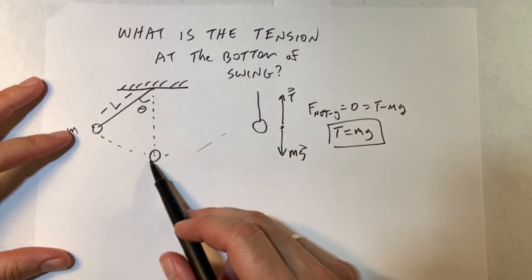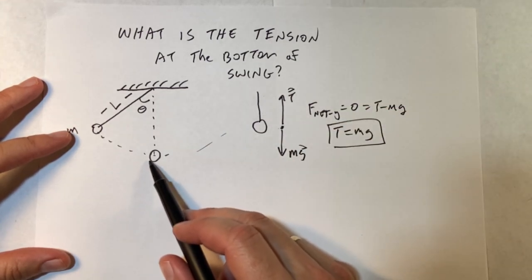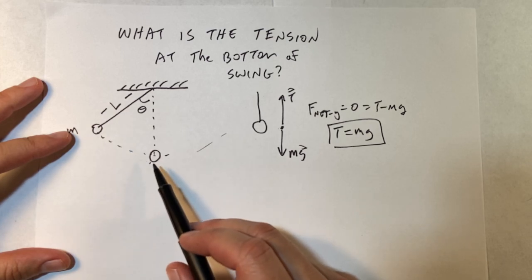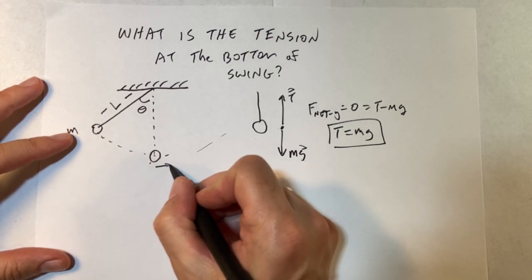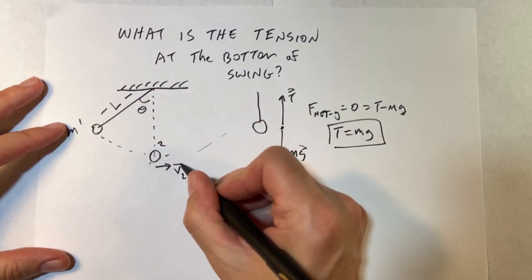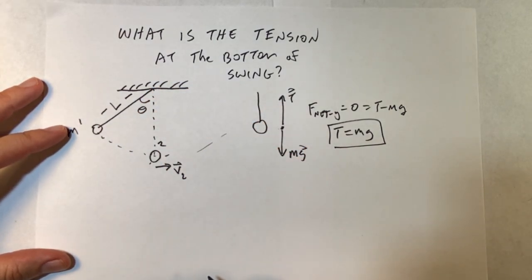This is different. What's different about this when it gets to the bottom and it's swinging? Well, the difference is that this one's going to be moving, let's call this position one and this position two. This is going to have some velocity v2. Big deal, right?